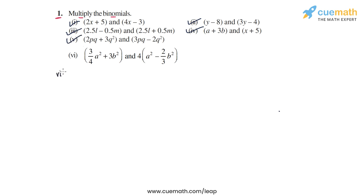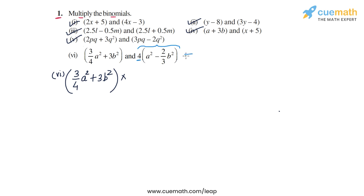Now we come to part 6, the last part, in which we have to multiply ¾A squared plus 3B squared with 4 times A squared minus ⅔B squared. First, multiplying the 4 outside the bracket with each term gives 4A squared minus 8/3 B squared, so the second binomial is written as 4A squared minus 8/3 B squared.